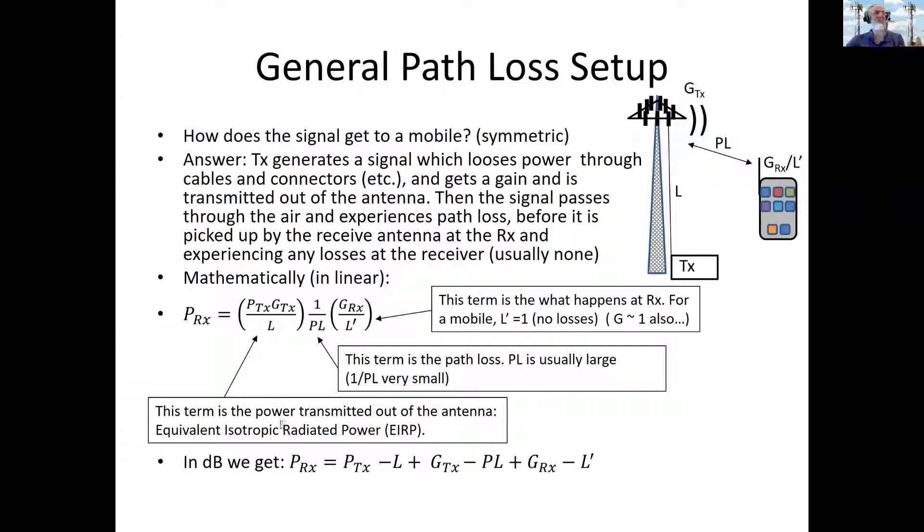We can do this in dB. We can take 10 log base 10 of both sides of the equation. And what happens? Well, all the multiplies become additions. All the divisions become subtractions. And we get a comparatively simple equation here. And what do we have? Well, these terms here, that's my EIRP. These terms here, well, log of 1 is 0. So these terms don't count for much. So in terms of a mobile phone, sometimes we talk about received signal level and think of it as just the EIRP minus the path loss.